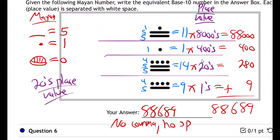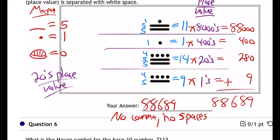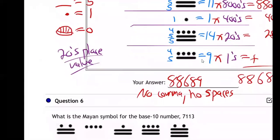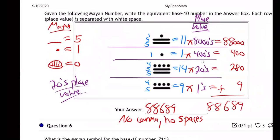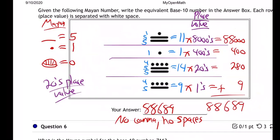And it'll say that right on the question. On the Canvas test question, it'll say write in the answer with no comma, no spaces. So 88,000, and so that big Mayan number is 88,689. Questions I can answer on that one?